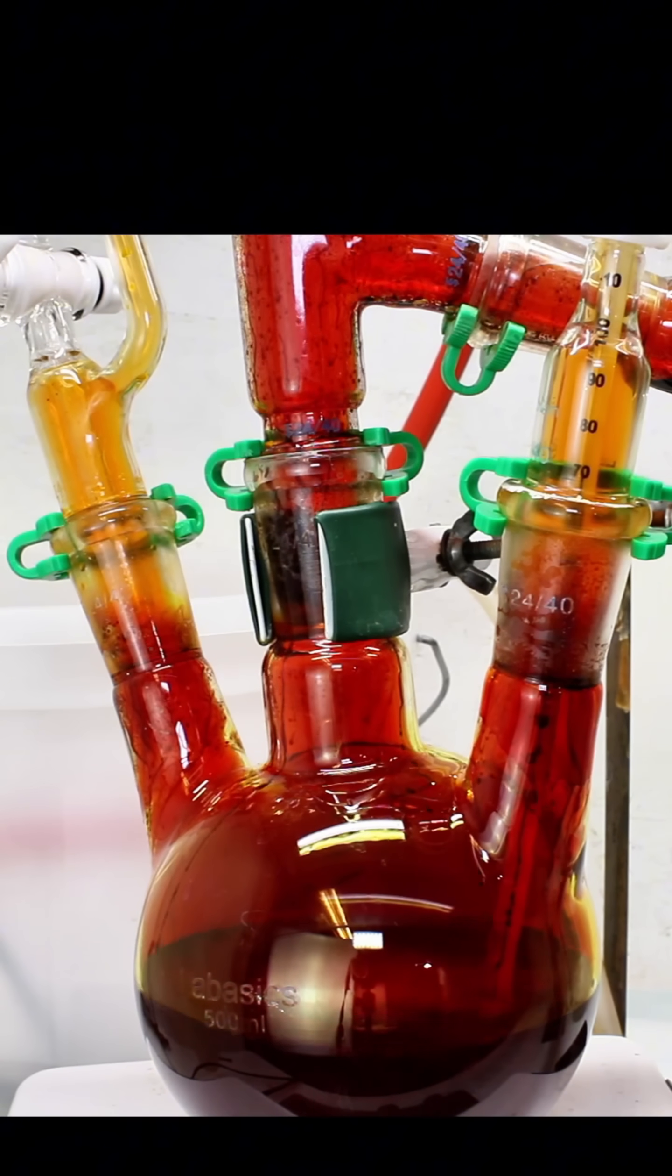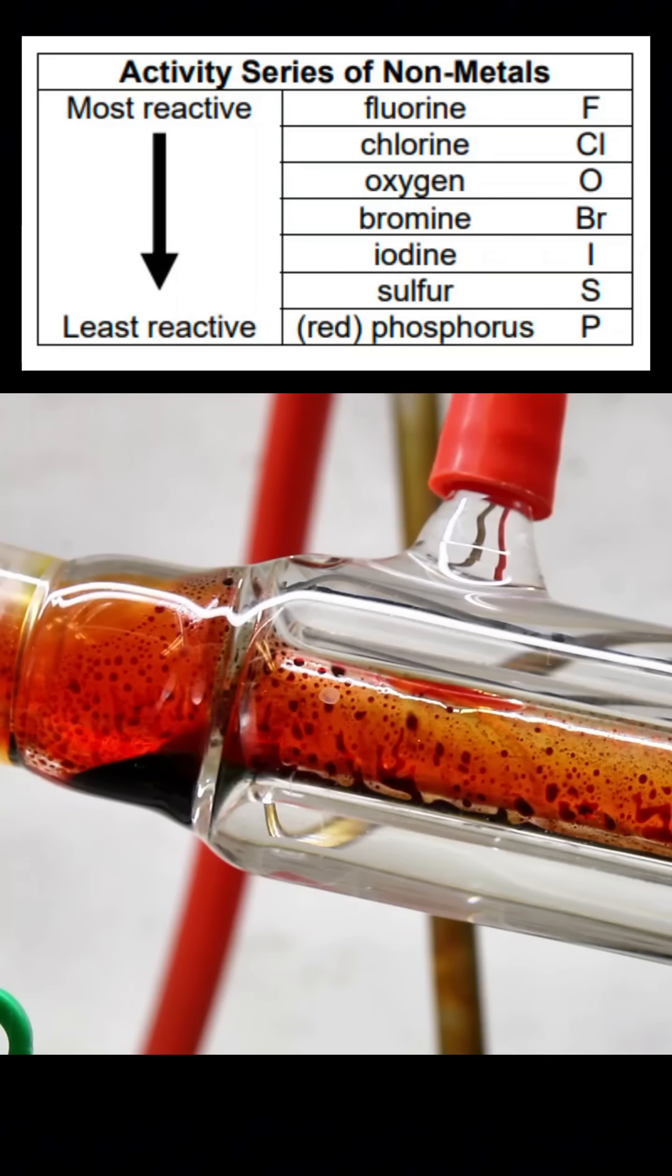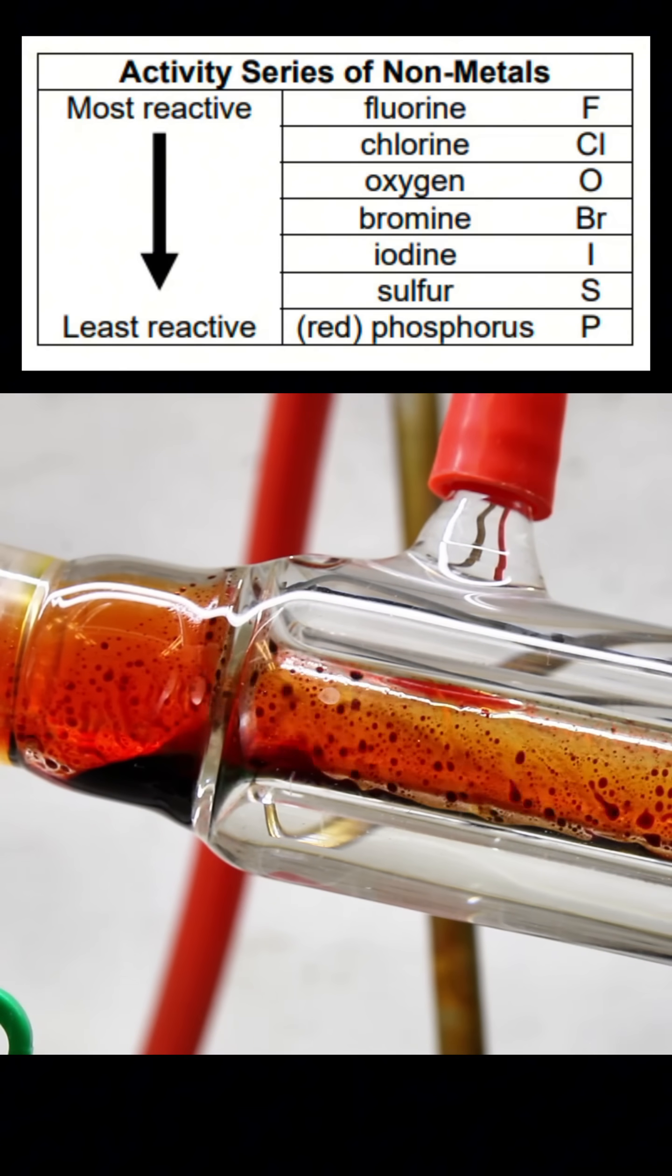Bromine has a boiling point of just under 60 degrees, so by holding this at 60 degrees I can boil off the bromine and leave everything else behind.